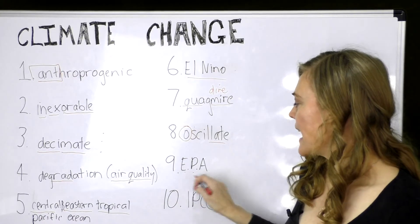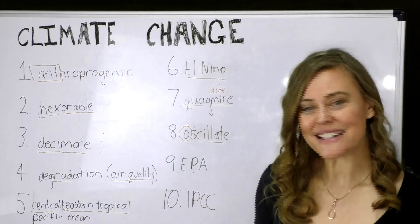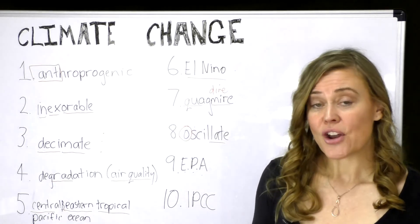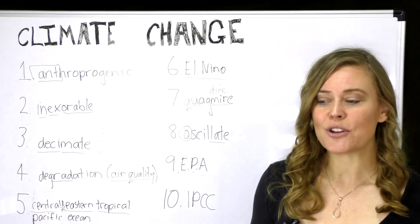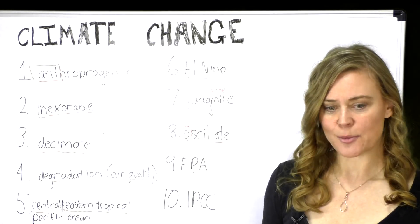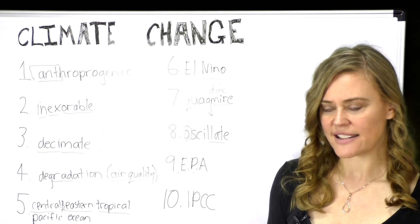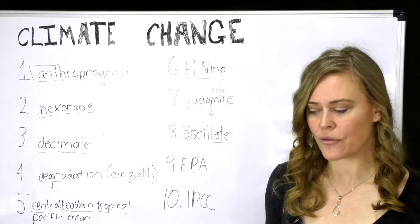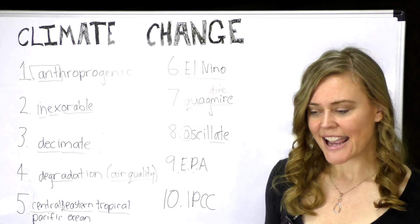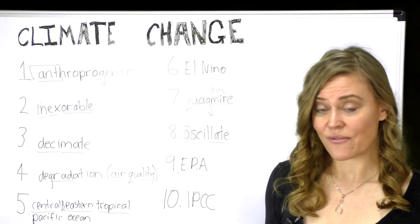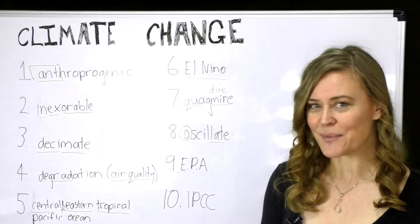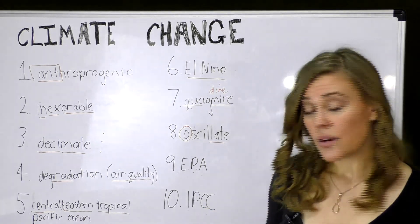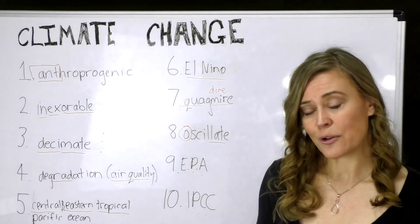Number nine: EPA — E for Environmental, P for Protection, A for Agency. Our keyword for number nine is 'cat.' Imagine cats standing upright with glasses on, like agents from the Matrix — superior and professional. All these cats represent the Environmental Protection Agency, protecting the environment.